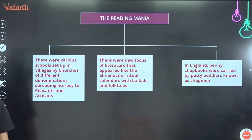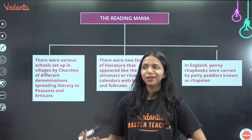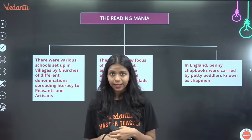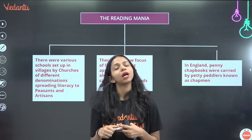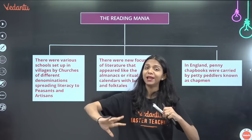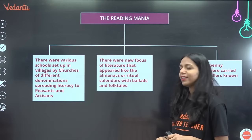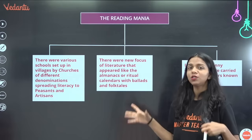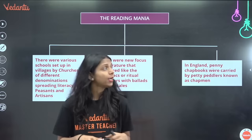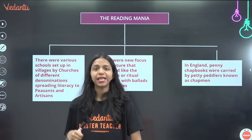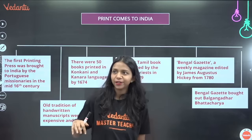We can say that at this point a reading mania developed — mania meaning a kind of craze. Since so many books were now available, the Church also used books as a weapon, opening schools in small tribal and forested villages to spread Christianity. This increased literacy rates. Most people read religious calendars — almanacs — and books with stories. In England, penny chapbooks were very popular — sold for just one penny each — by traveling sellers called penny peddlers or chapmen.